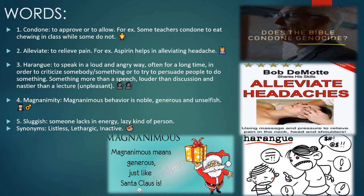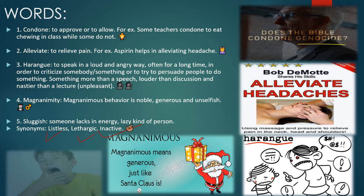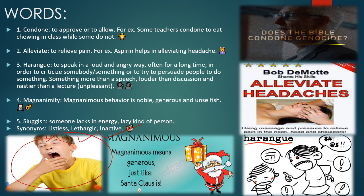The fifth word is 'sluggish.' If you are very active, this word is not for you. This word is for people who always feel tired, have no energy, and are very lazy. So someone who is lacking energy or feeling lazy is sluggish. You can also use alternative words like listless, lethargic, or inactive. In the picture shown, a student is yawning — because that person is sluggish, listless, lethargic.